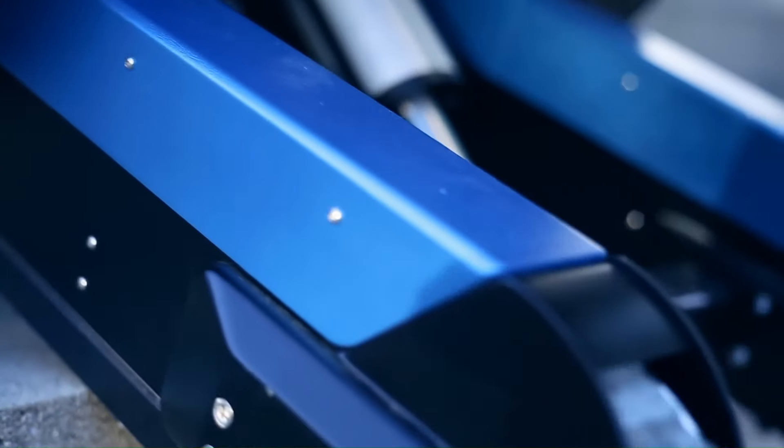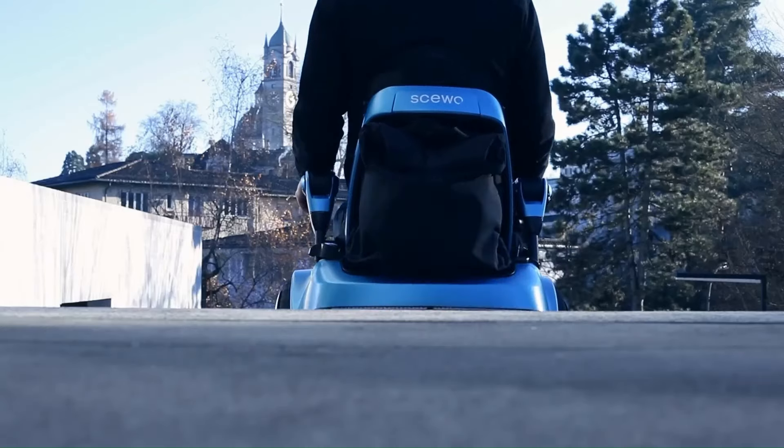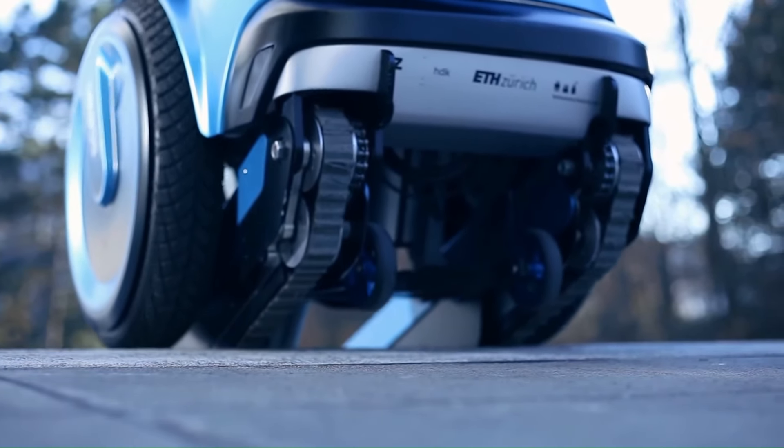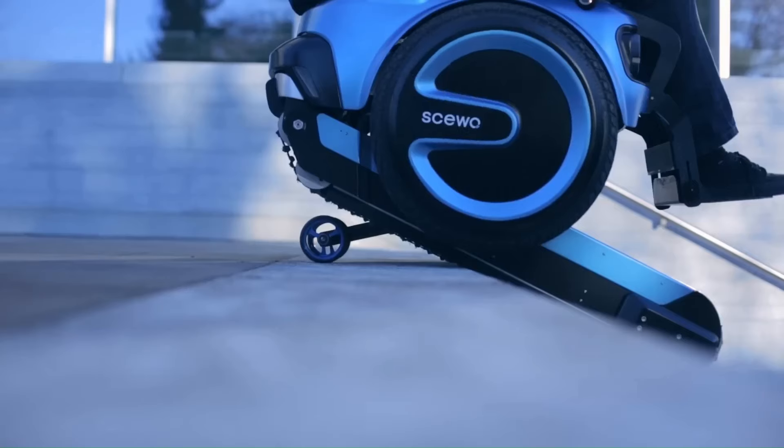Stair-climbing. The Suo BRO can climb up and down stairs, curbs, and other obstacles with ease. This is thanks to its unique Caterpillar tracks and intelligent sensors.